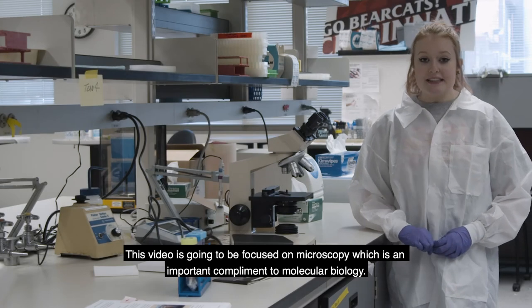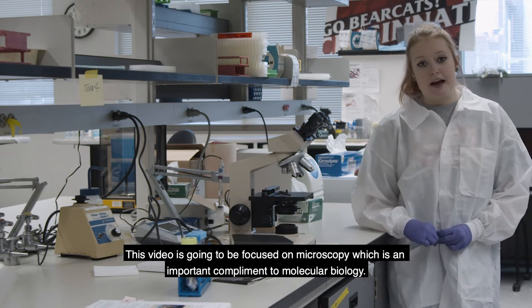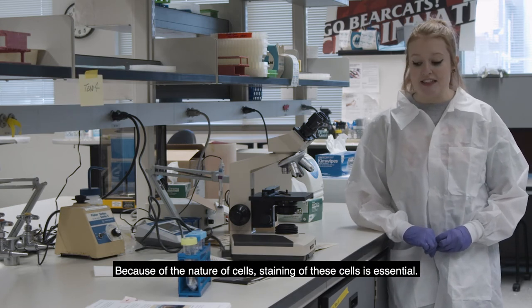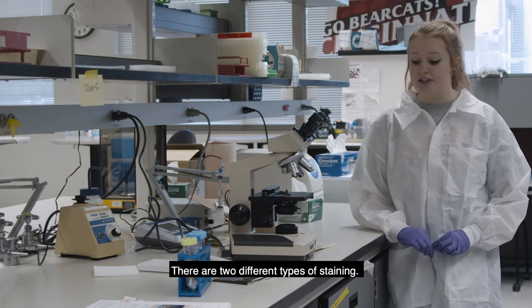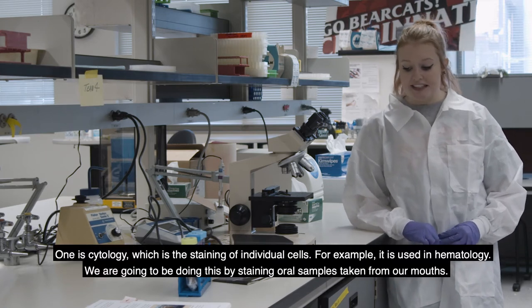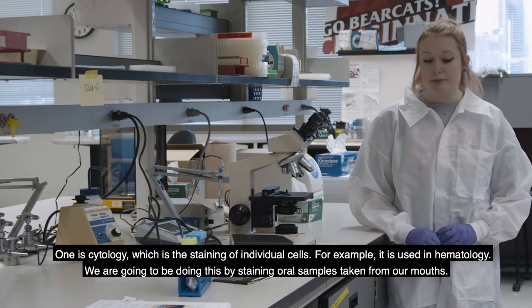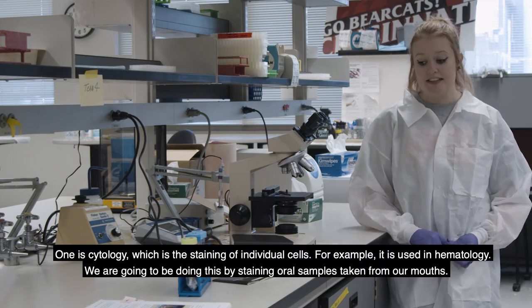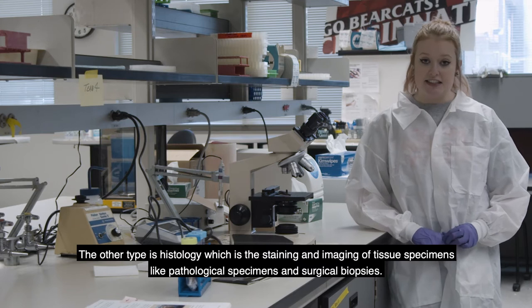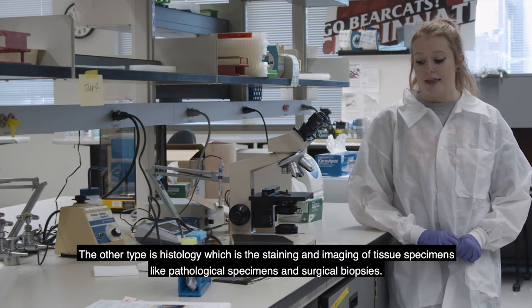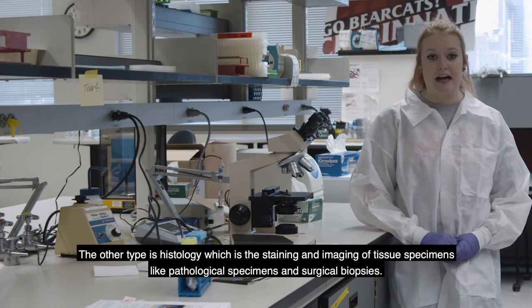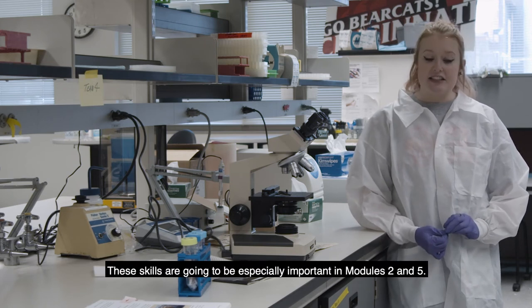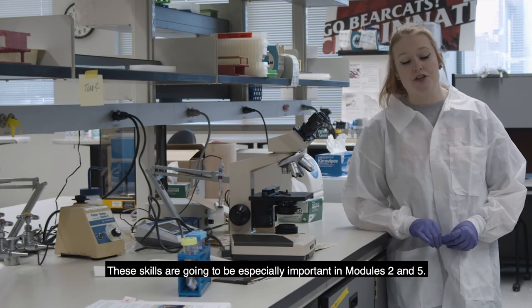This video is going to be focused on microscopy, which is an important complement to molecular biology. It's often used to reveal the details of disease progression. And because of the nature of cells, staining of these samples is essential. And there's two different types of staining. One is cytology, which is the staining of individual cells, for example, used in hematology. And we're going to be doing this by staining oral samples taken from our mouths. And then the other is histology, which is the staining and imaging of tissue specimens, like pathological specimens and surgical biopsy. And mice are a common model for human development and disease that are used in histology. And these fields are going to be especially important in modules 2 and 5.